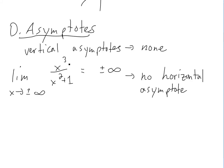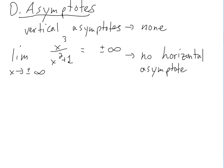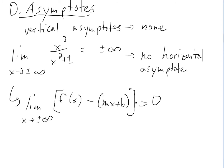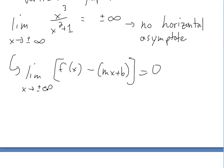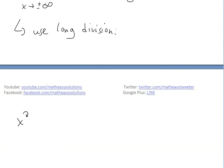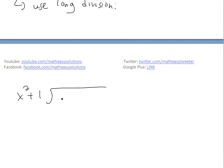Since this is a rational function where the numerator is exactly one degree higher than the denominator — x³ versus x² — we should have a slant asymptote. To find it, we need the limit as x approaches plus or minus infinity of f(x) minus a line mx + b equaling zero. We use long division: dividing x³ by x² + 1, we put x on top, multiply to get x³ + x, and subtract.